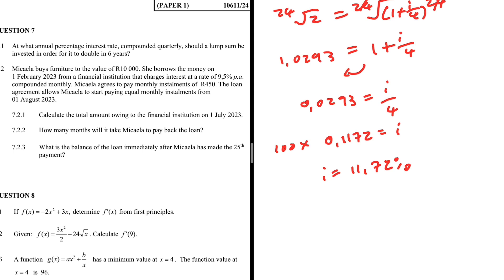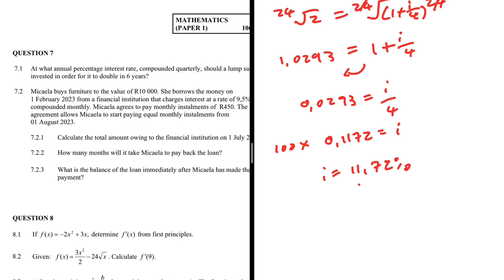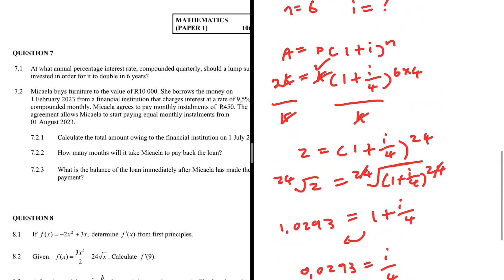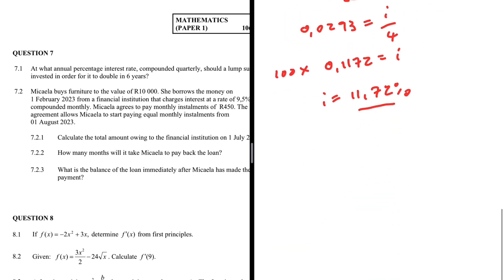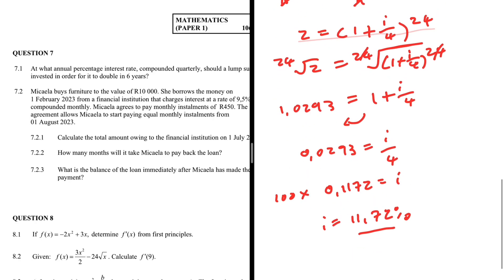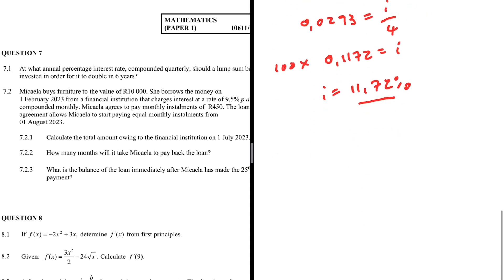That is the interest rate required to flip a lump sum k to 2k in six years compounded quarterly — 11.72%. Not really complicated; pretty straightforward if you've solved past exam questions. Let's move on to question 7.2.